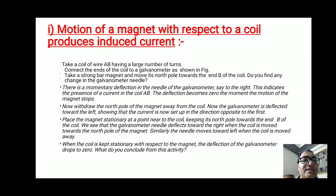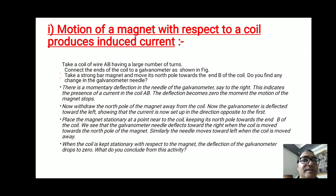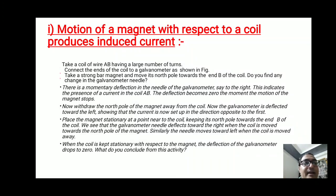Now place the magnet stationary near the coil, keeping the north pole towards end B. We see that the galvanometer needle deflects towards the right when the coil is moved towards the north pole, and moves towards the left when the coil is moved away. When the coil is kept stationary with respect to the magnet, the deflection drops to zero. We conclude that we can either insert the magnet into the coil, or keep the magnet stationary and move the coil — in both cases, induced current is produced as shown by the galvanometer.